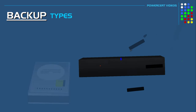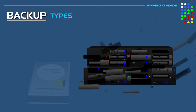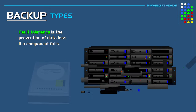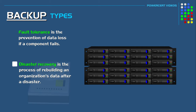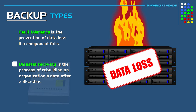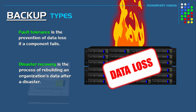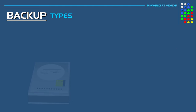Hello everyone. In this video we're going to talk about different backup types. Fault tolerance can be defined as the prevention of data loss if a component fails. But in the event that fault tolerance fails, disaster recovery would be our last option. Disaster recovery is the process of rebuilding an organization's data after a disaster has happened, such as data loss. So even if we have fault tolerance measures, we still need to backup our data. And there are three different types of backups.